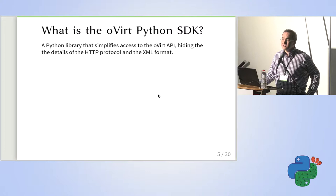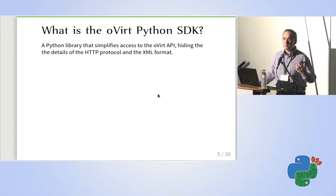The Python SDK is basically a Python library designed to simplify usage of the API. It tries to remove from the developer the complexities of dealing with the HTTP protocol and with XML parsing and rendering. That's the idea — simplifying things for Python developers.